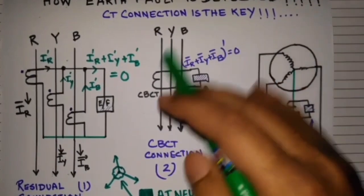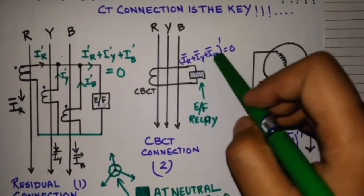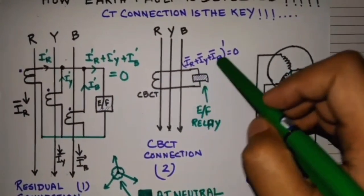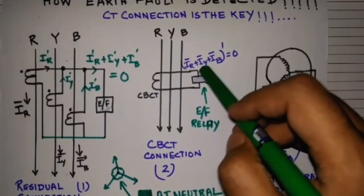So here at first the summation is done, IR, IY, IB, then it is divided by the CT ratio. So here also in normal operating condition the summation will be zero, but when there is an earth fault it will not be zero.